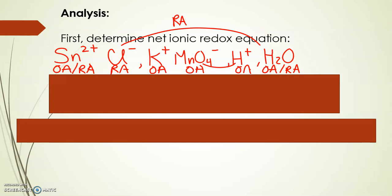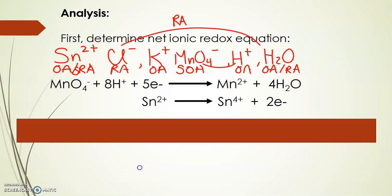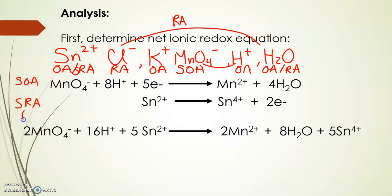Then you identify your strongest oxidizing agent and your strongest reducing agent. We know MnO4- is a strong oxidizing agent, and from the Chemistry 30 data book, our SRA is Sn2+. Once that's done, we write our half reactions — they're all written for you. Your SOA is written exactly as you see it from the data booklet, and your SRA you flip. You have to make sure the electrons lost equal the electrons gained. Multiply one half reaction by 2 and the other by 5 to get 10 electrons, and then you have the net equation. All of that work is step 1 — that is your chemical equation.